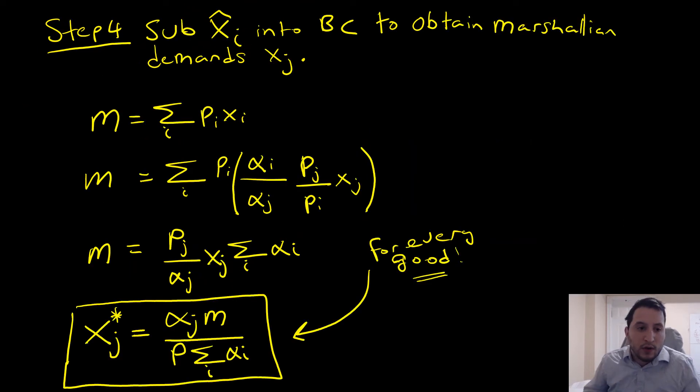Next, we're going to sub in our intermediate bundle into our budget constraint to obtain our Marshallian demands for x_j. Now we have to know a couple of tricks here. Putting a little hat here, we note that we can knock off p_i and p_i here. Note that every term that doesn't have a subscript on it can just be pulled through that sum. We're able to have this thing right here separate from it.